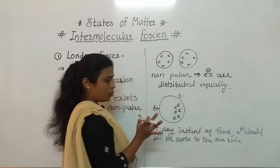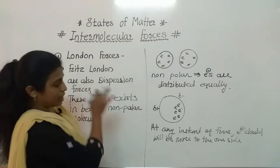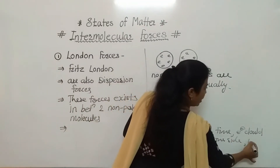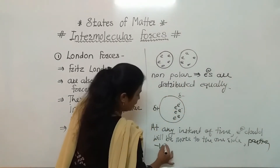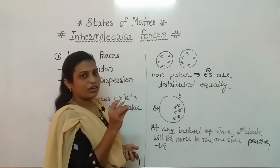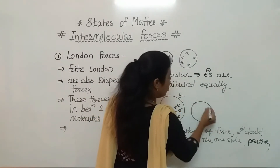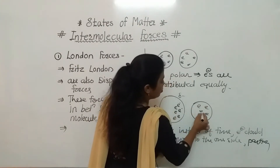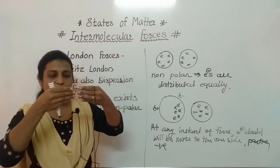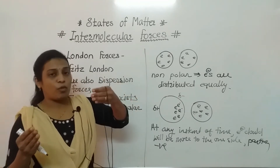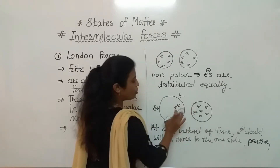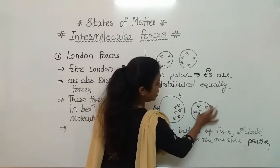When in a non-polar molecule, at any instant of time the electron cloud is more at one end, it becomes partially negative. When this non-polar molecule — in which a temporary dipole has formed — comes in contact with another non-polar molecule where electrons are distributed equally, because of that partial negative charge, like charges repel. So the electrons in the second molecule run away to the other corner.